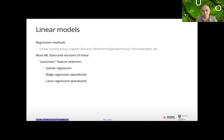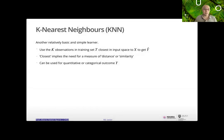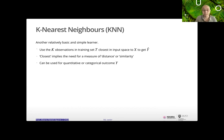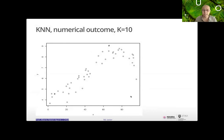K-nearest neighbors is a relatively basic, non-parametric learner. The main idea: go and use the K observations in the training set that are closest in the input space to the value you want to predict. 'Closest' implies the need for a distance or similarity measure — many options exist, for both numerical and categorical data. KNN can be used for predicting either quantitative or categorical outcomes.